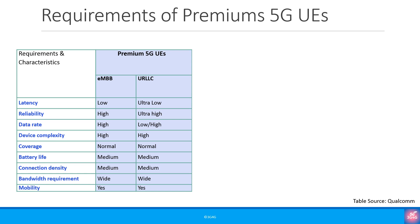eMBB and URLLC devices can be considered as high-end premium UEs. We can summarize the requirements of these UEs as shown in the table here, originally from a Qualcomm document whose reference is provided at the end of this presentation. The main difference between them is data rates, latency and reliability. While we do not have any commercial URLLC devices in the market right now, smartphones and fixed wireless access devices are examples of premium 5G UEs.